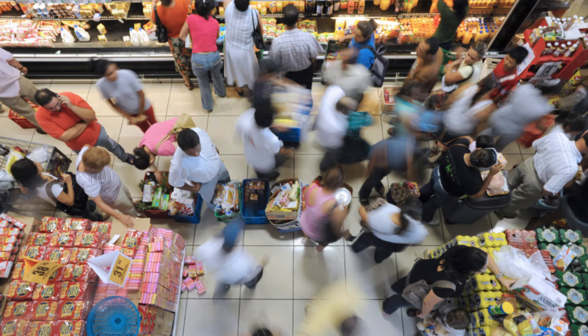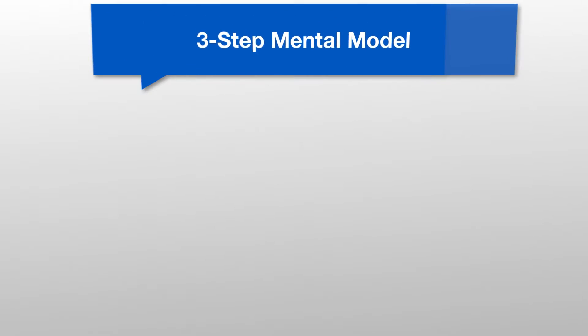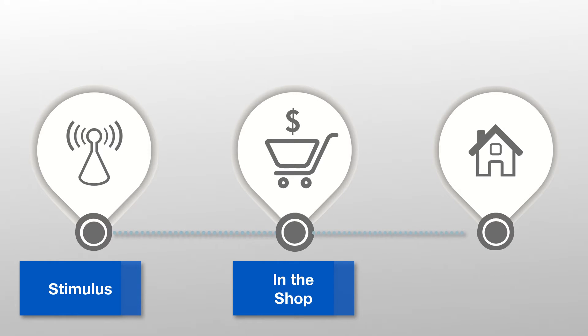This theory explains all the different steps that a consumer goes through before and after buying a product. It is based on the three-step mental model created by Lafley, former CEO of Procter & Gamble, who said that consumers go through three critical steps when purchasing a product: stimulus, in the shop, and experience.